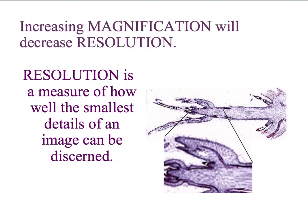However, increasing magnification will also decrease resolution. Resolution is how blurry it looks underneath the microscope, or how well we can see the smallest details of the image. You can see on the images on this slide that the resolution decreases as the image gets larger. So our microscopes need to have focus knobs to help us make the resolution sharp.